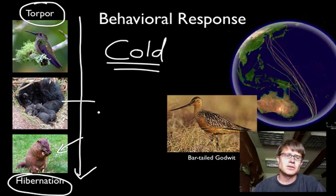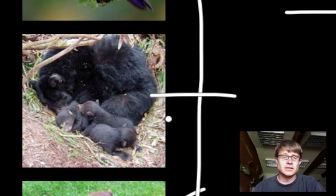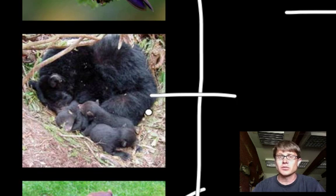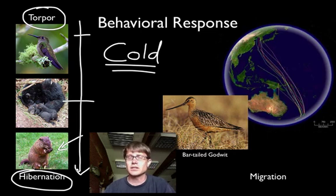Things we think of as hibernators are probably not true hibernators — like a bear. Even though bears slow down their metabolism and lower their body temperature a little bit, they're easily aroused and their temperature doesn't go near zero. So there's a continuum from daily torpor to hibernation, but essentially what you're doing is cranking down your metabolism to survive during a cold period.